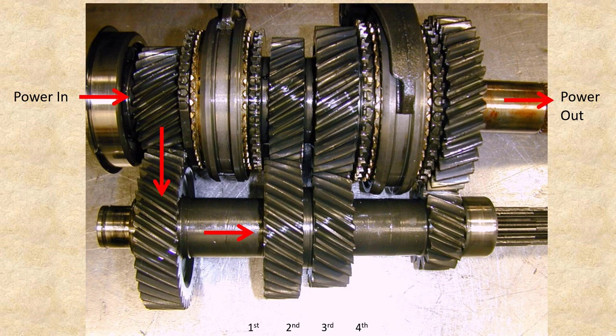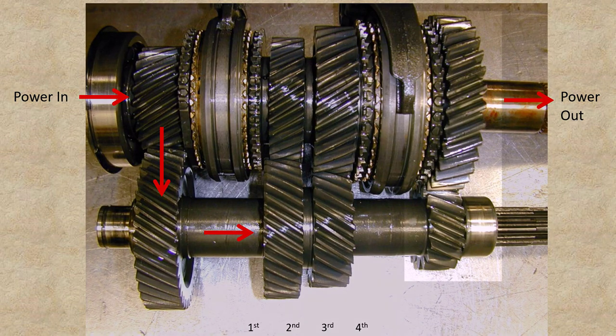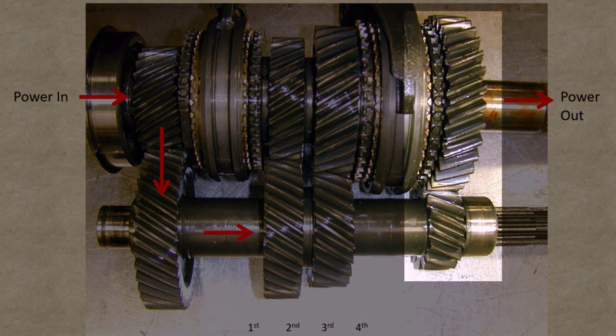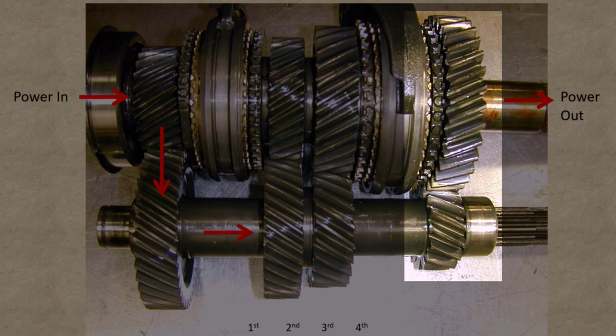Earlier in this training module you learned that a small gear driving a large gear produces a torque increase. Notice that the largest driven gear on the output shaft is paired with the smallest drive gear on the counter shaft. This represents the largest torque multiplication and therefore is first gear.